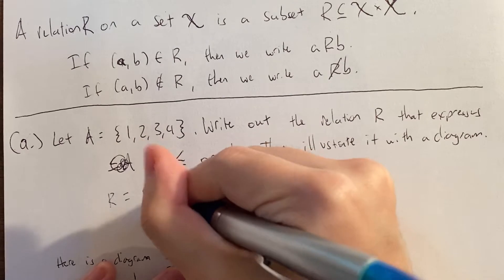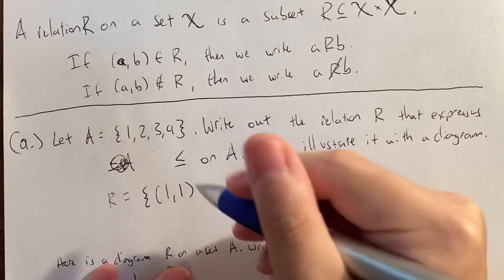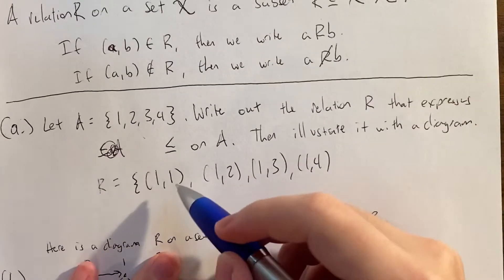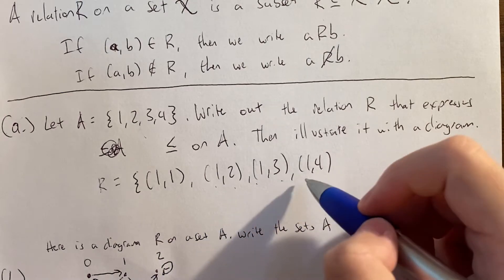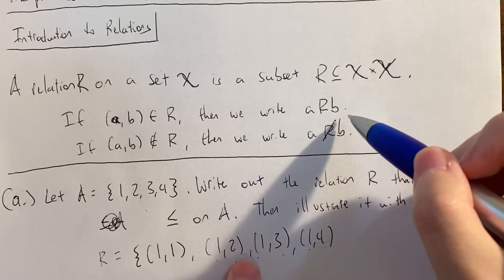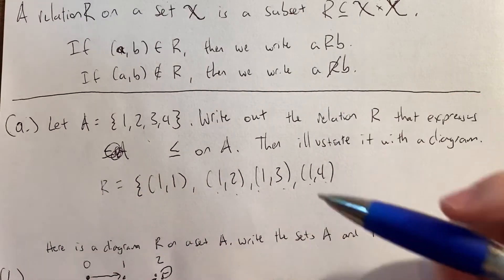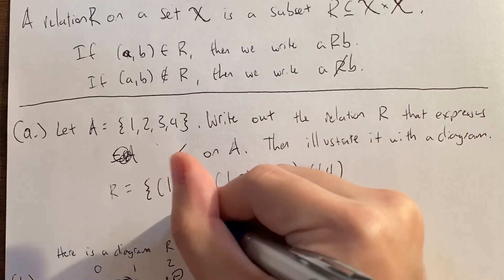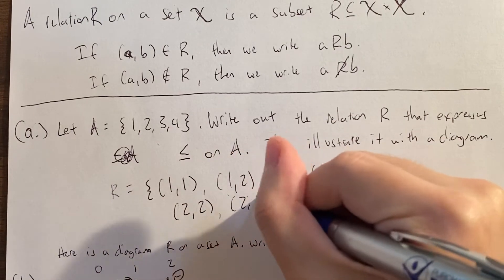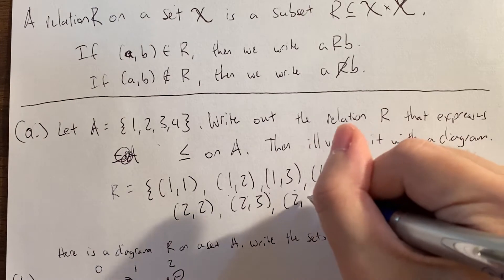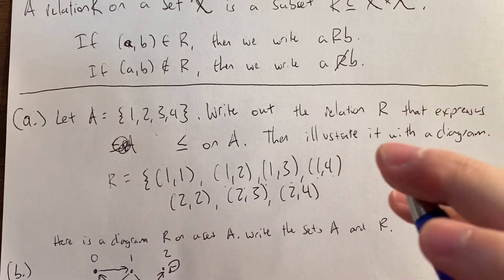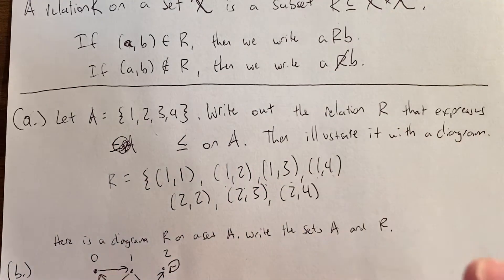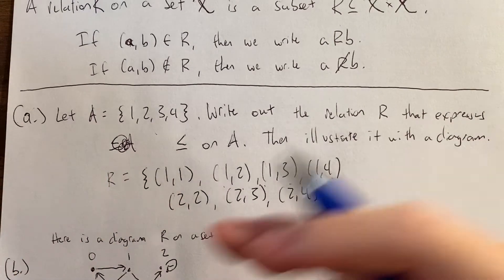For example, with the relation less than or equal to: (1, 1) is in the relation because 1 ≤ 1. (1, 2) is in the relation, (1, 3) is in the relation, (1, 4) is in the relation because 1 ≤ 2, 1 ≤ 3, 1 ≤ 4. So we say 1 R 2, 1 R 3, 1 R 4. If we start with 2 as the first coordinate, we can choose (2, 2) because 2 ≤ 2, and (2, 3) because 2 ≤ 3. Essentially, you're in R if the relation holds on that coordinate pair.